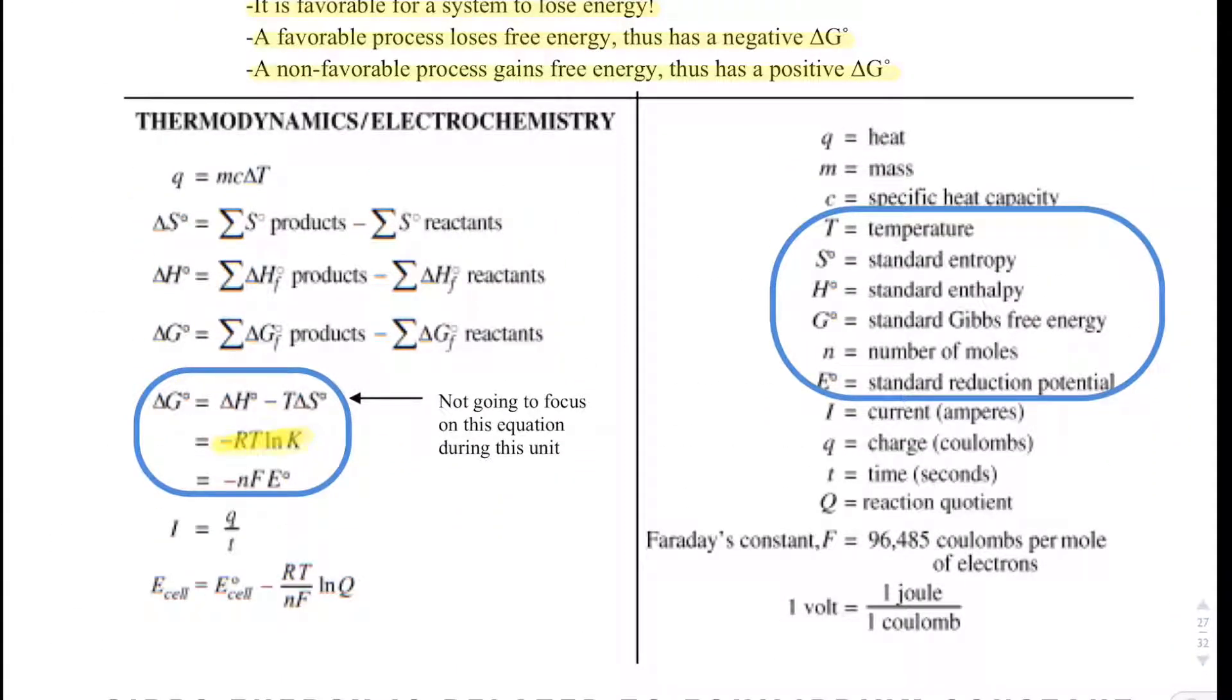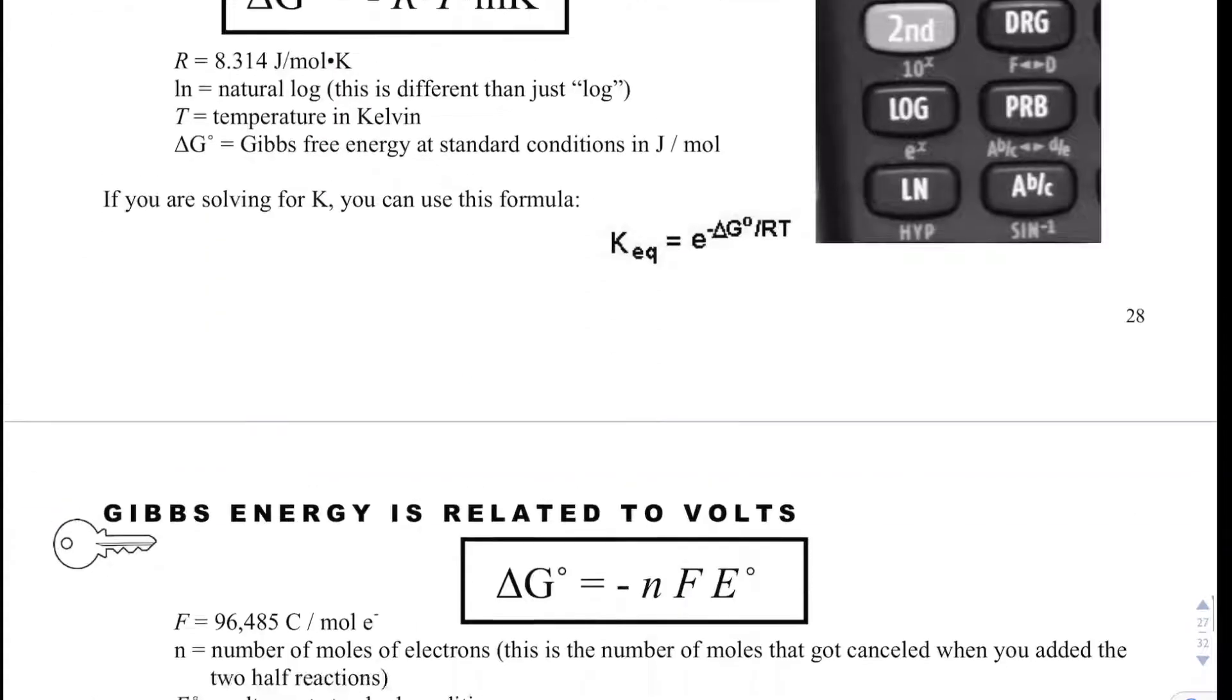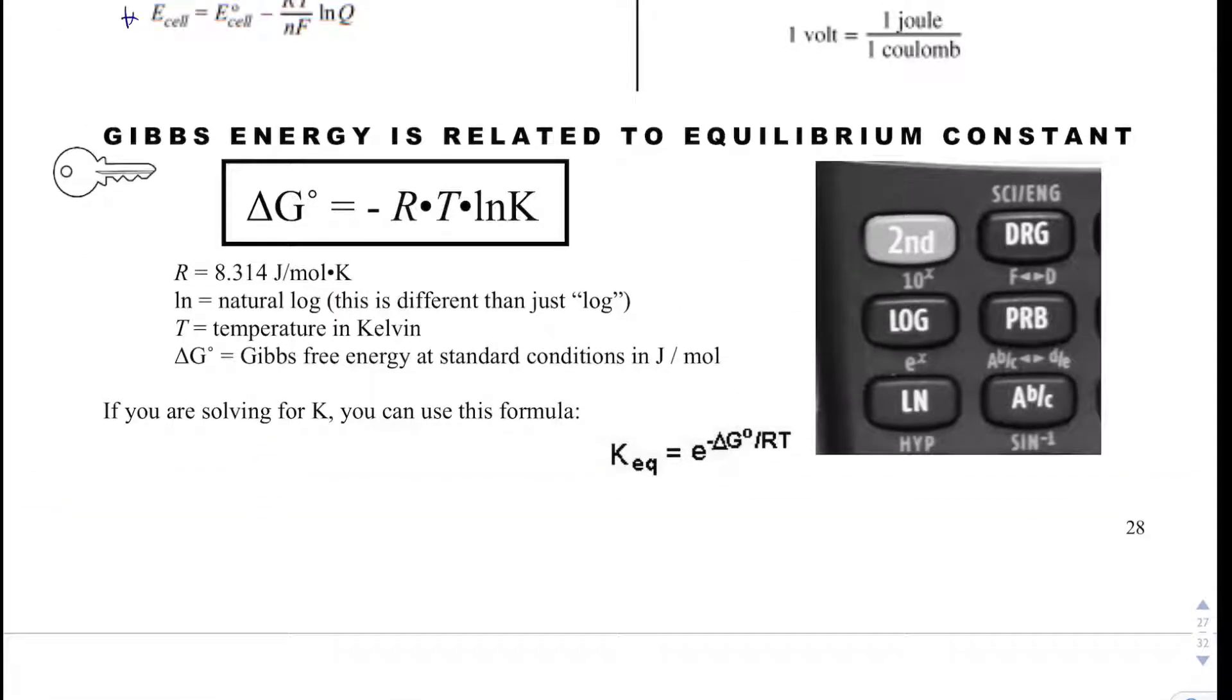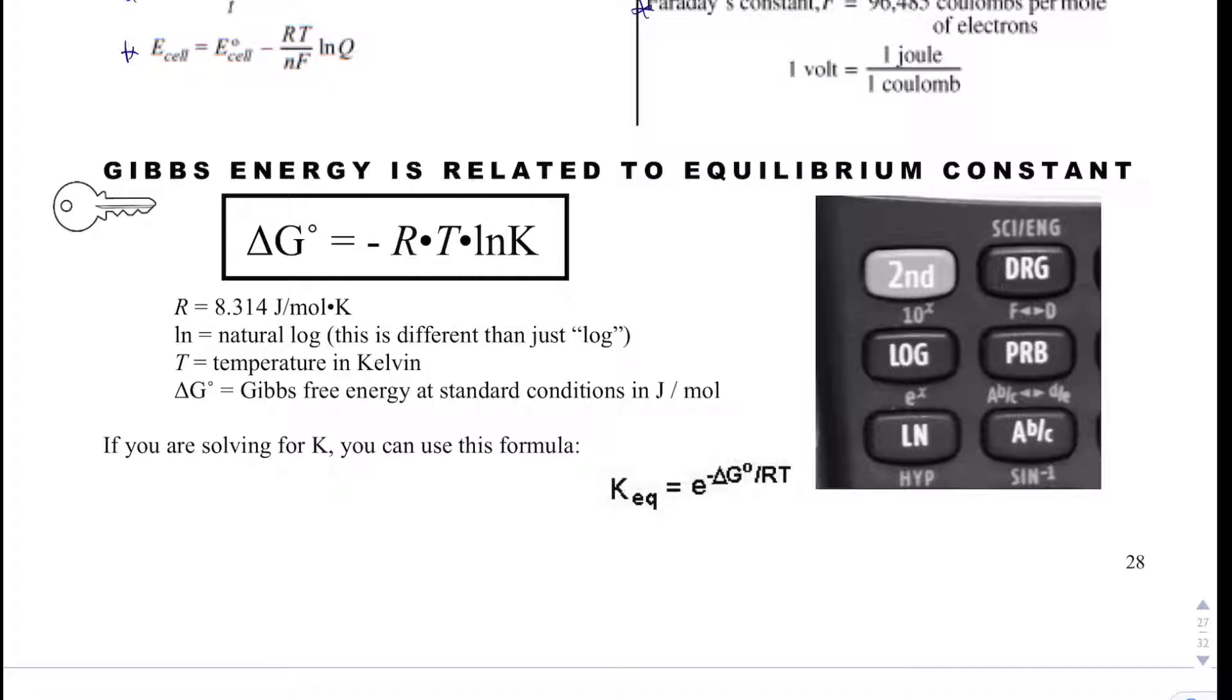These are the two reactions we're going to worry about here. We see that we've already talked about the Nernst equation, Faraday's constant. Next note is I equals Q over T. I don't know why AP does this, but these are all delta G equals. So we're going to focus on these two. We look at this first one, delta G. Some people call this rat link, but I call it delta G equals minus RT ln K. This is how we can get delta G if we're given K.